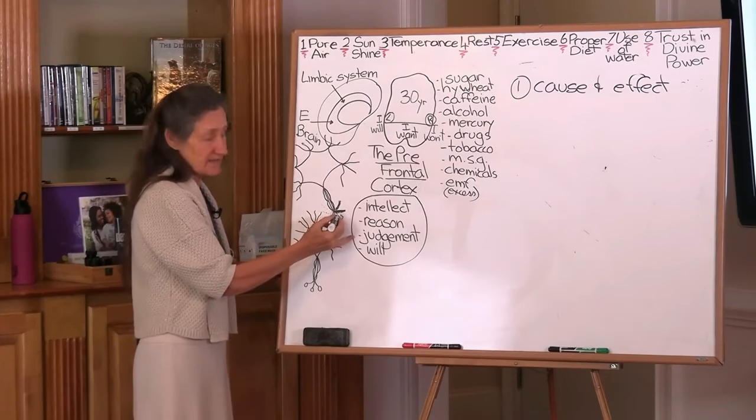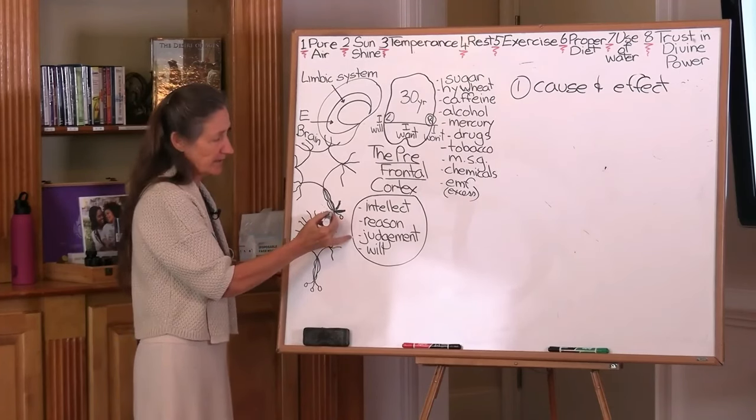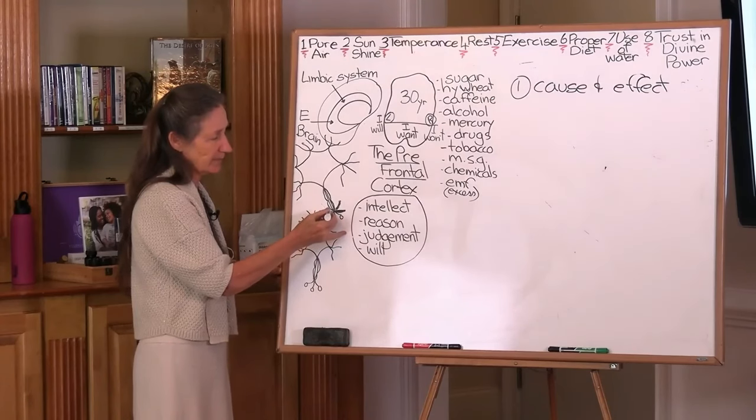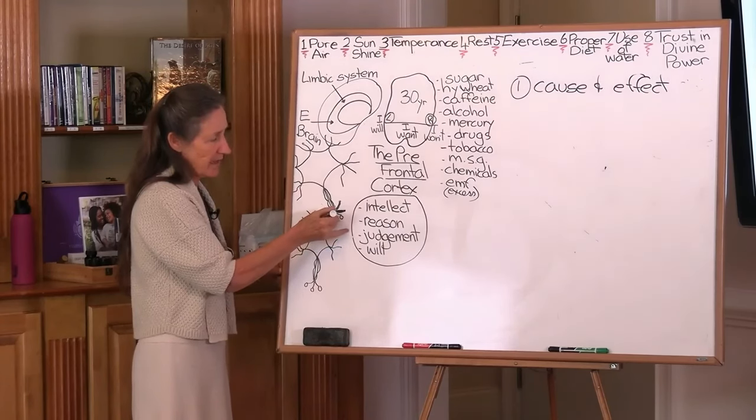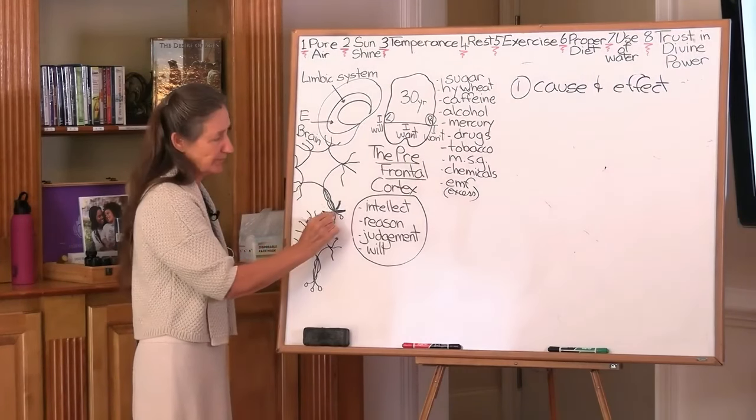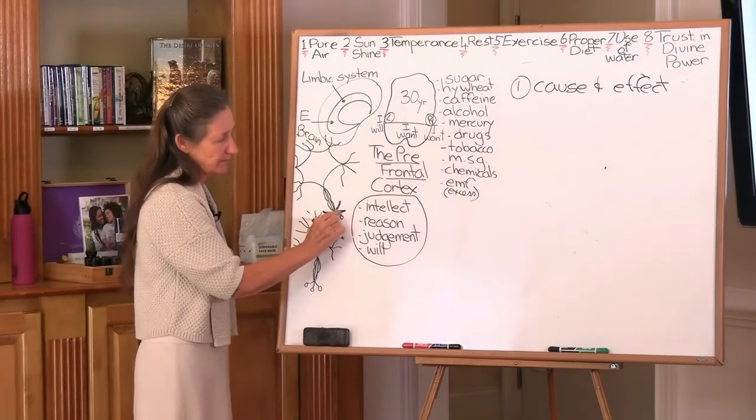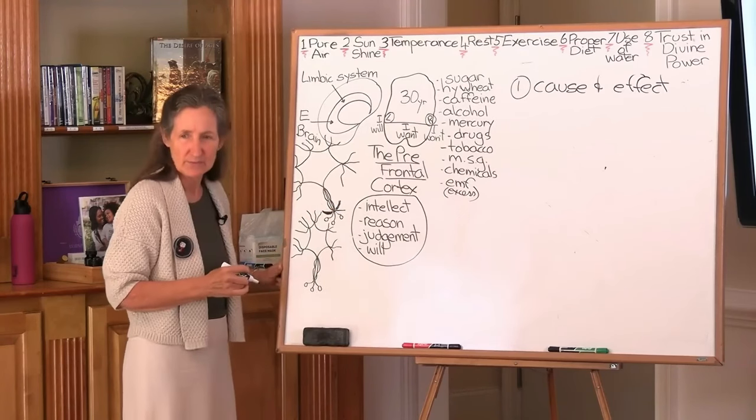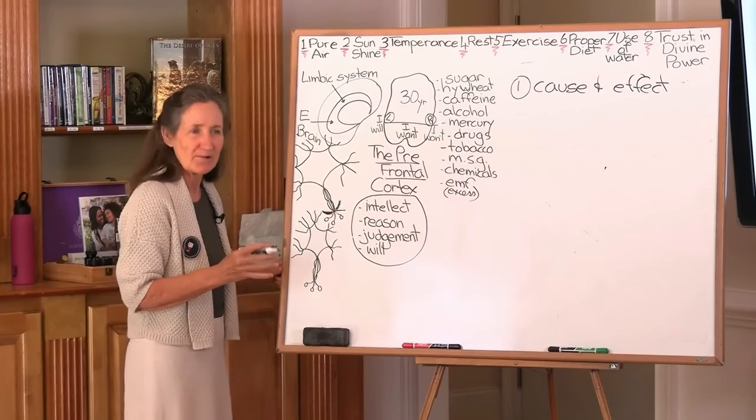And then as the days and weeks went by, what's happening here? Her conquering panic attack pathway is getting bigger and she's not going down the panic attack pathway anymore. So what's happening to it? It's getting smaller and smaller and smaller. She's rewiring her brain.